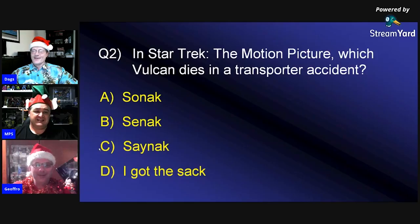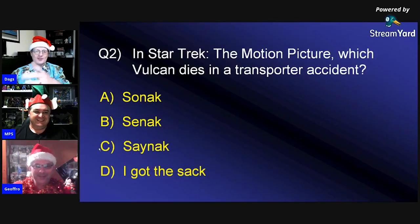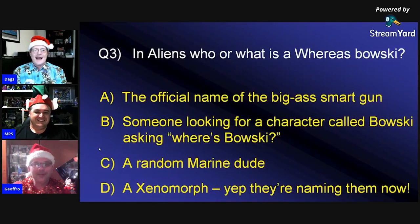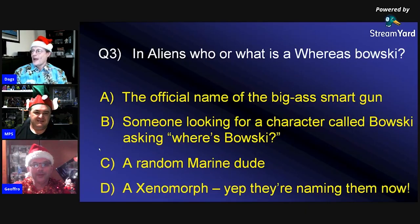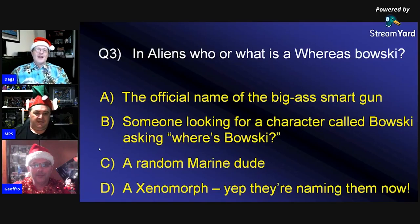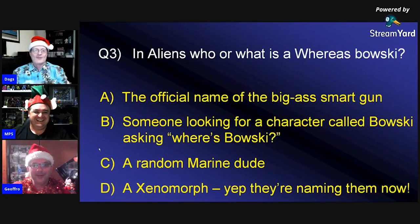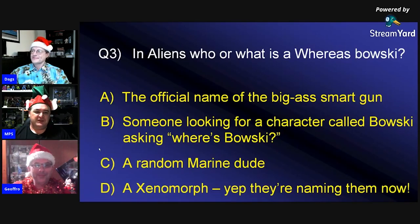People are posting answers in chat but the host can't tell which question they're answering. Question three: In 'Aliens,' who or what is a 'Where's Bowski'? Is it A) the official name of the big-ass smart gun, B) someone looking for a character called Bowski, C) a random marine dude, or D) a xenomorph? One participant guesses B (Lep's brother Lepowski), the other guesses C.